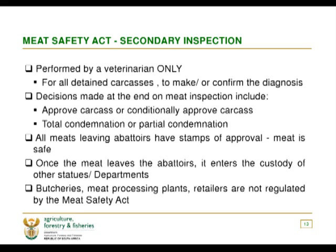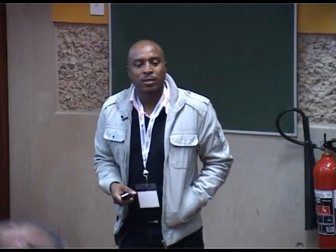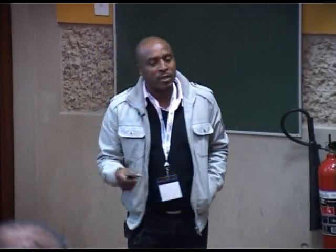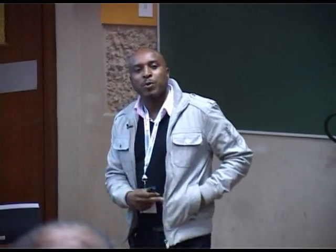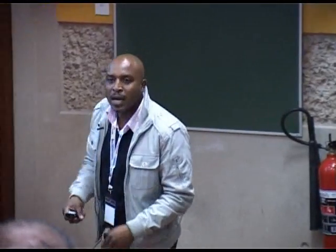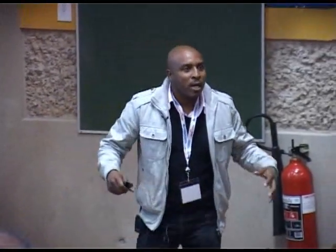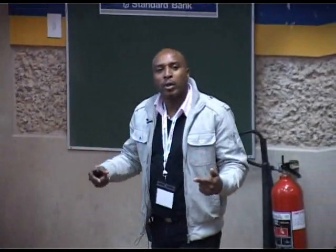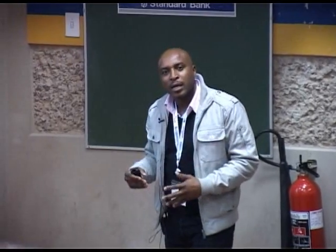All meat leaving abattoirs has stamps of approval saying the meat is safe. Once the meat leaves the abattoir, it enters the custody of another statute — the Department of Health. That is why recently, when we had a problem with the meat scandal, people did not understand the role played by the Department of Agriculture versus the role played by the Department of Health. When everything goes out of control, blame falls on the Department of Agriculture without really knowing who is doing what. The Department of Health takes over immediately when the meat leaves an abattoir.